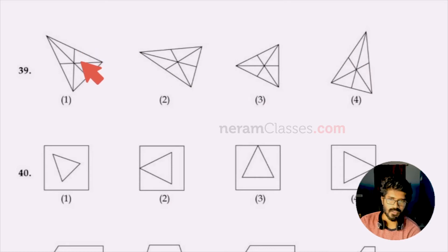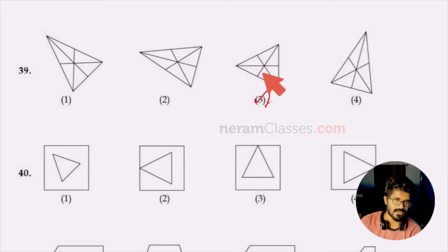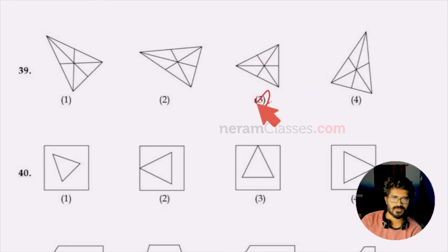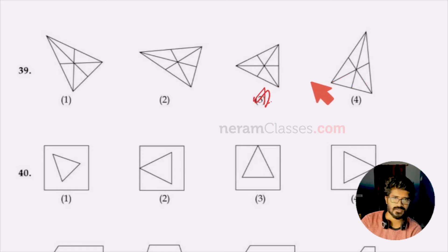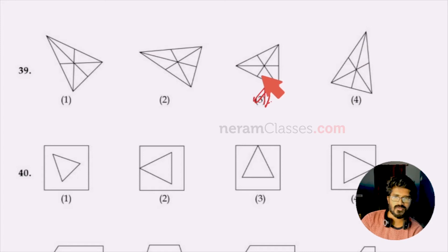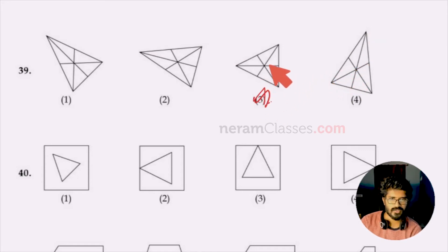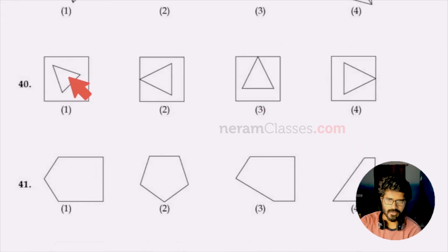For question 39, the odd figure is the third option because the other triangles are right-angle triangles, whereas the third one is an equilateral triangle. Option three is the right answer.